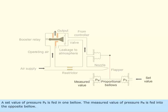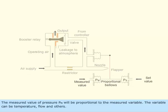The measured value of pressure, Pm, is fed into the opposite bellow. The measured value of pressure, Pm, will be proportional to the measured variable. The variable can be temperature, flow, and others.